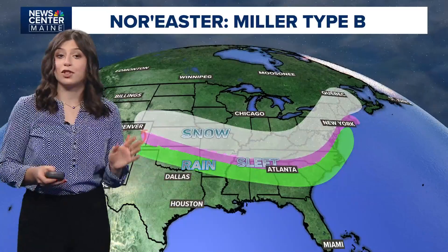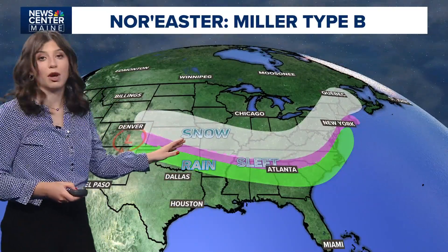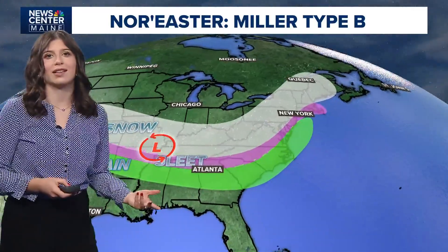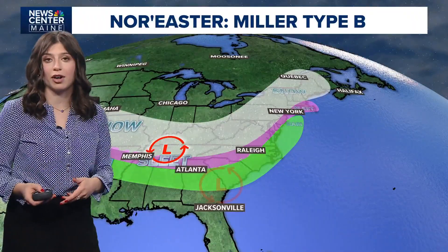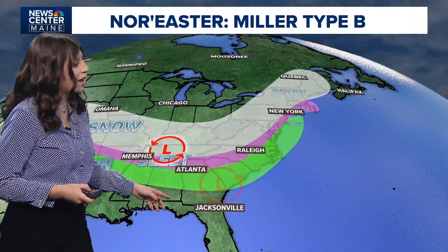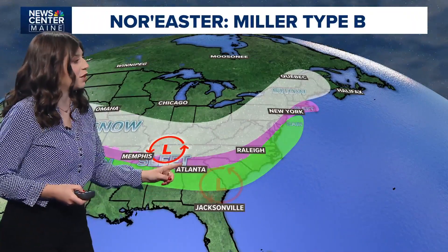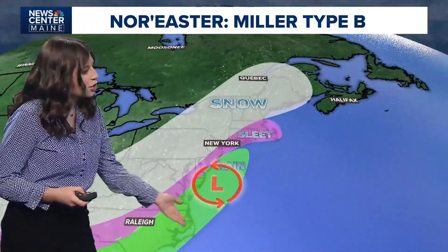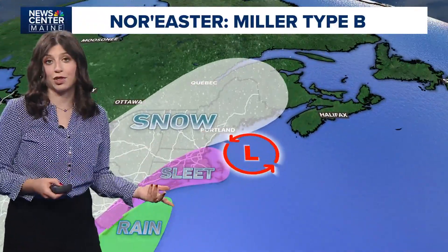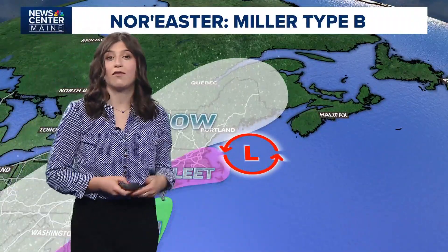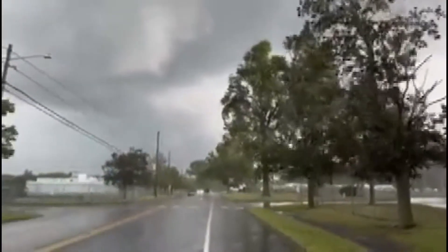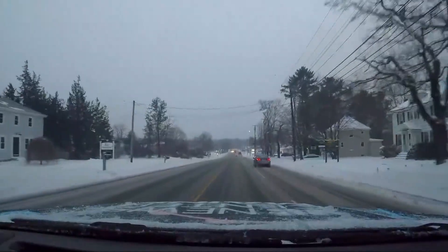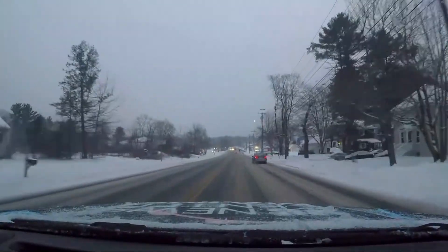Miller type B storms have two components. A low comes off the Rockies, known as a Colorado low. This storm weakens as it approaches the Appalachian Mountains. Then a secondary low pressure forms on the leeward — coastal in this case — side of the mountains. The primary low then transfers energy to the secondary low, which then tracks up the coast similar to how a Miller type A storm would. These storms can cause damage to the very populated east coast cities like DC, New York, Boston, and here in Maine. They often bring high winds causing damage to trees and power outages, and they usually bring a lot of snow or heavy rain depending on where the rain-snow line sets up.